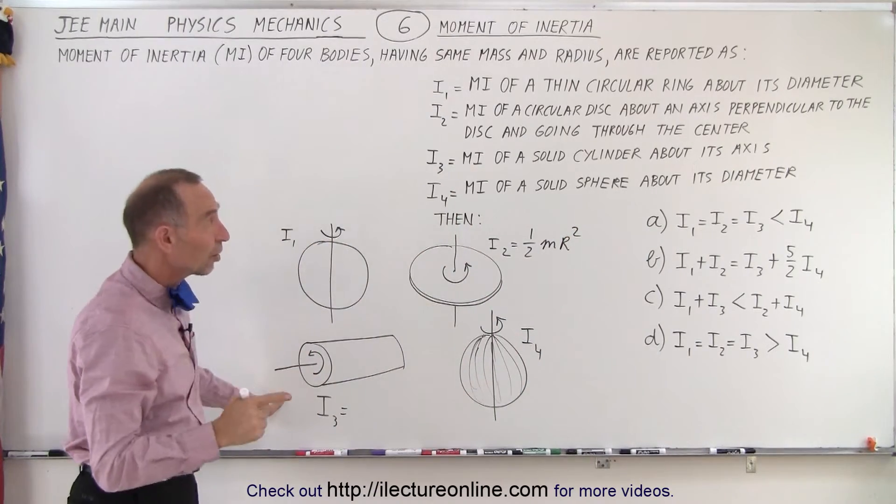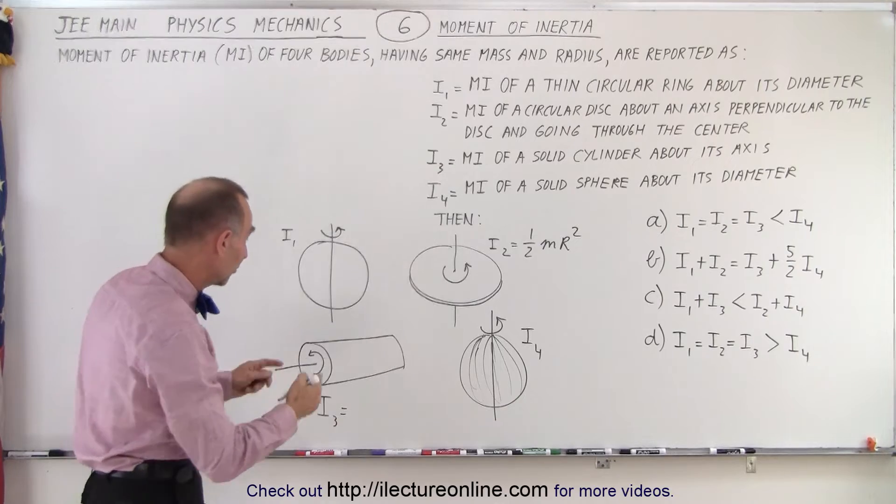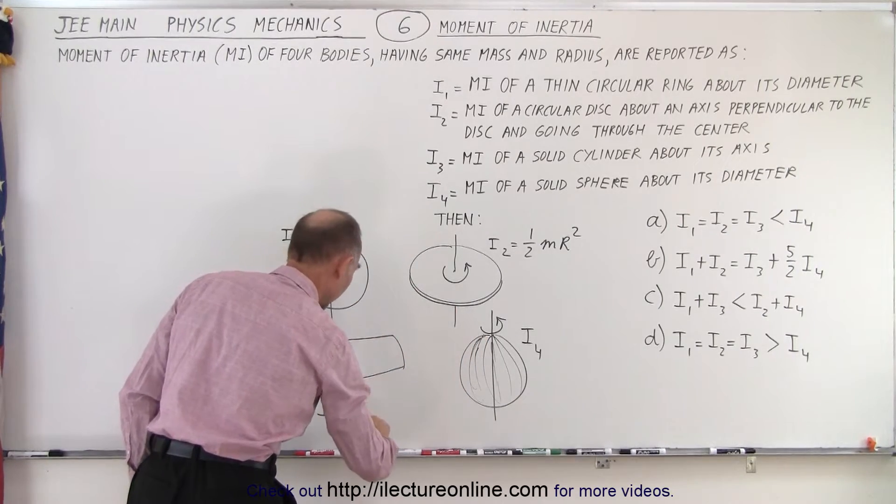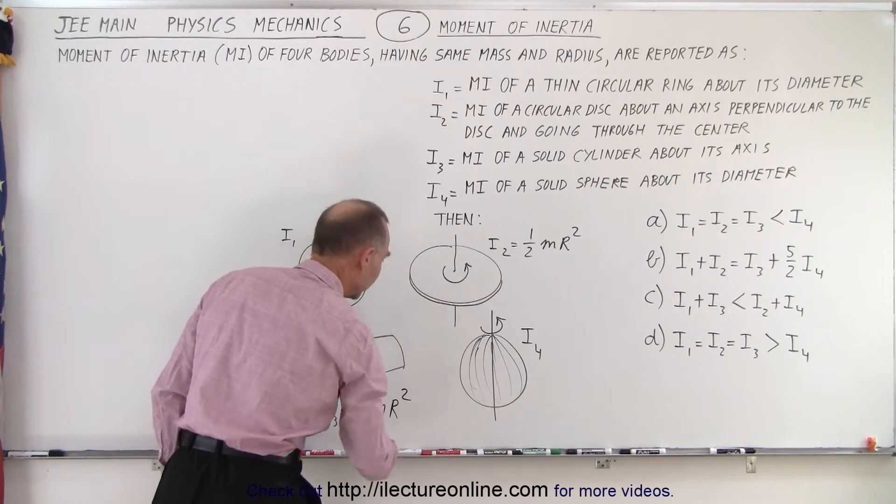How about this one? The moment of inertia of a solid cylinder about its axis. Well, it's basically a disc but made longer. The moment of inertia is the same, one-half m r squared.